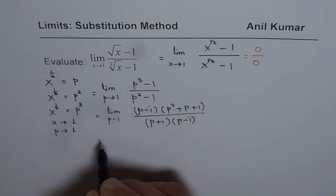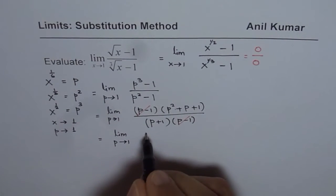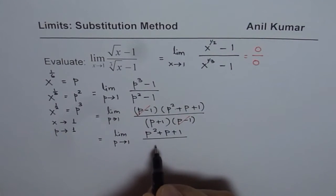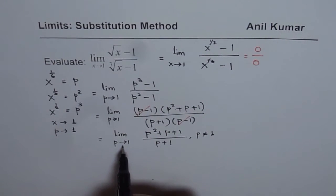Now we can cancel and then find the limit by substituting p as equal to 1. So we have this expression as p square plus p plus 1 divided by p plus 1. In this case, p is not equal to 1. We are approaching 1. So we are very, very close to 1.